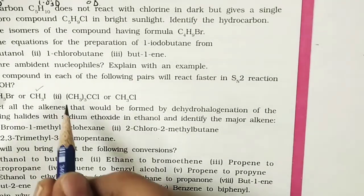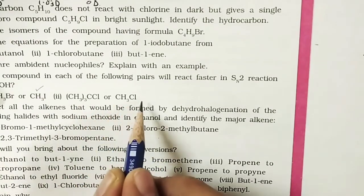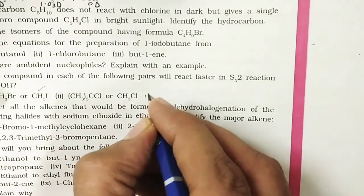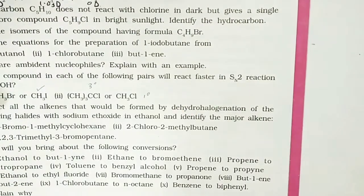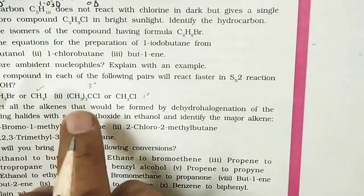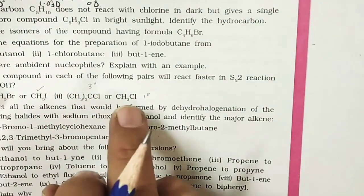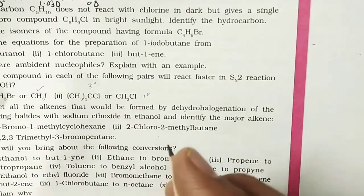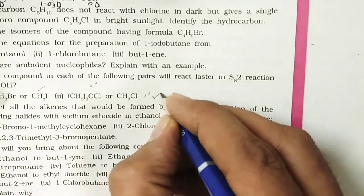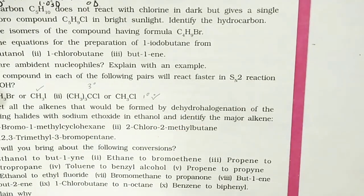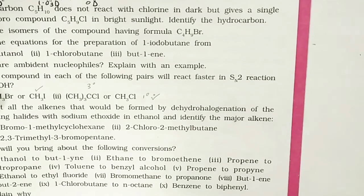So in SN2 reactions, primary halides with good leaving groups react most rapidly. The answer is chloromethane over tert-butyl chloride because the tertiary carbon has far greater steric hindrance that blocks nucleophilic attack.